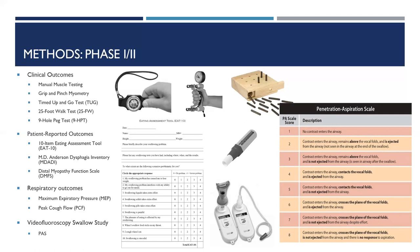We also administered video fluoroscopic swallowing studies — the type shown in the earlier video. These were reviewed using the Penetration Aspiration Scale (PAS), an eight-point ordinal scale describing airway invasion and patient response. PAS score 1 indicates no contrast has entered the airway — completely normal — while a PAS score of 8, the most severe, indicates contrast enters the airway, migrates down into the trachea, is not ejected by cough, and the patient has no response — silent aspiration. The worst rating of each swallow was used to detect dysphagia initially in this study.